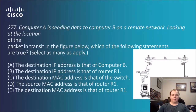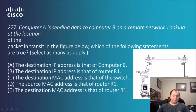Question 277: Computer A is sending a packet out to Computer B on a remote network. Looking at the location of the packet in transit in the figure below, which of the following statements are true — select as many as apply. With these types of questions you can probably just look at eliminating what isn't true to make it a bit easier on yourself.